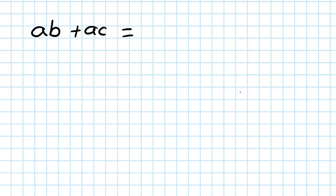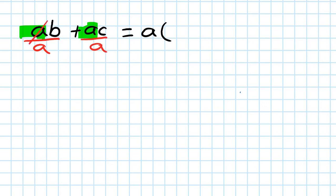Now, AB plus AC. The common factor of this expression is A. So we have to take the A out, which is equal to A open bracket. Because we take the common factor out, which is A, we get rid of it by dividing by A — cancel out. So you should get B plus C.